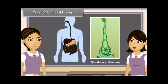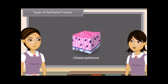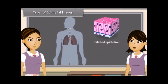Some cuboidal or columnar cells have a free border which bears thread-like cytoplasmic outgrowths known as cilia. These cells form the ciliated epithelium. It is found in sperm ducts, trachea, bronchi, kidney tubules and oviducts.